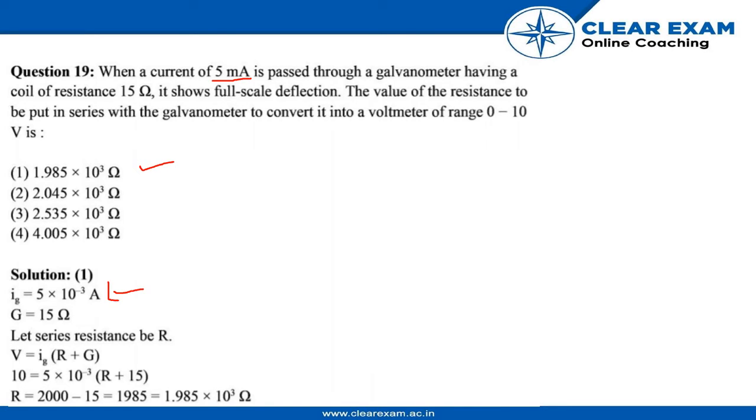We are given the current is 5 mA and the galvanometer coil resistance is 15 ohms. Let the series resistance be R. The formula is V = I(R + G), as both are in series.